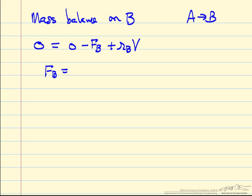There's a flow rate of B leaving, and then there's the rate of reaction of B times the volume. So we're going to write flow rate of B, R sub B is minus R sub A, so that's K times C_A.